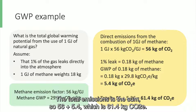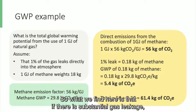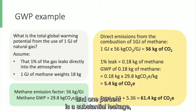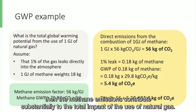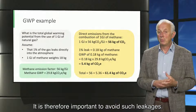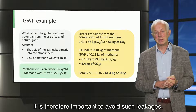The total emissions is the sum, so 56 plus 5.4, which is 61.4 kilograms of CO2-equivalent. So what we find here is that if there is a substantial gas leakage — and 1% is a substantial leakage — then the methane emissions contribute substantially to the total impact of the use of natural gas. It is therefore important to avoid such leakages.